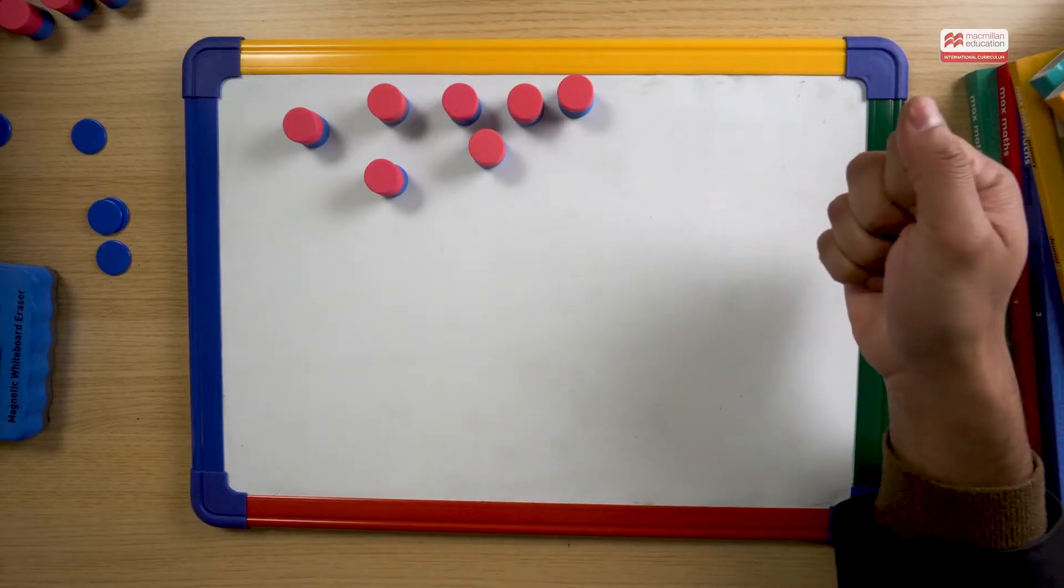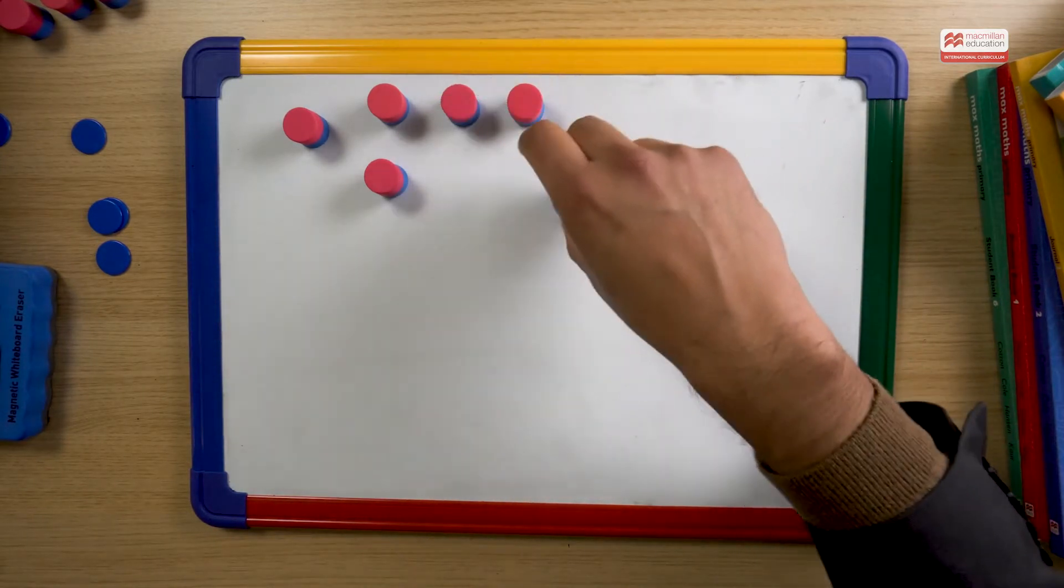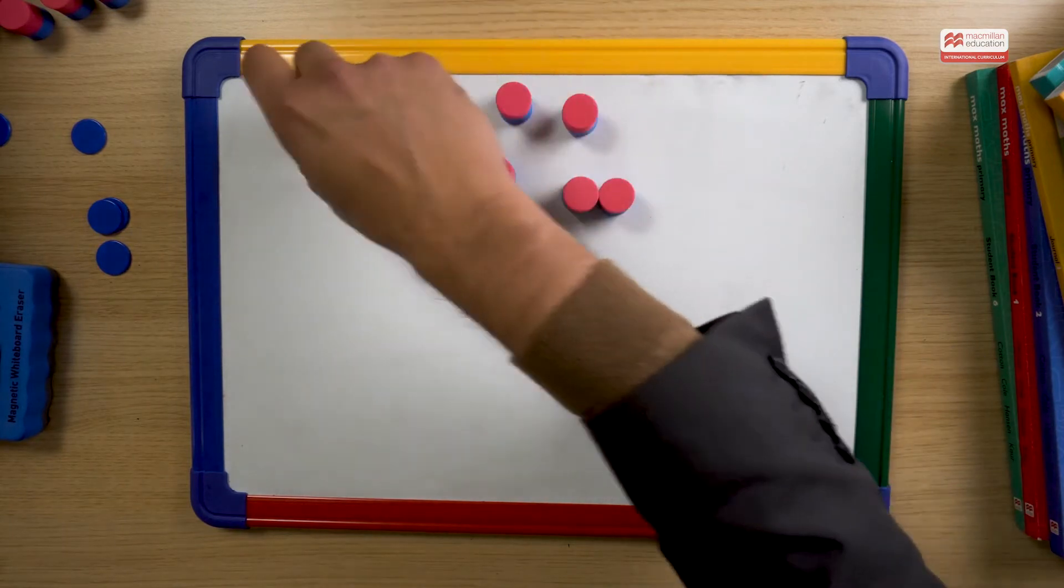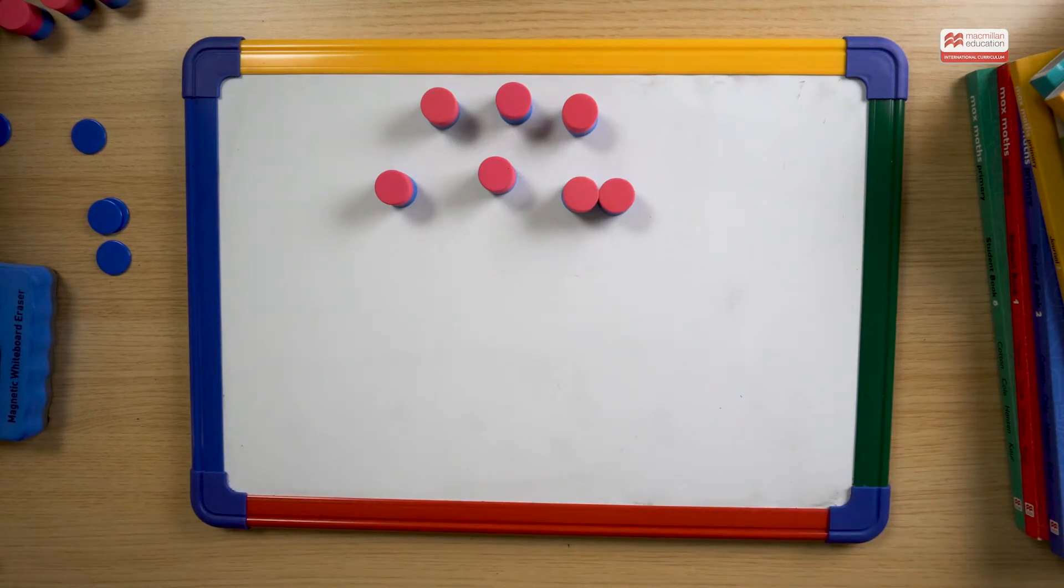So we've looked at factors and now we're going to look at another type of number and the factors of that type of number. We have a few counters here in front of us. One, two, three, four, five, six, seven. Seven counters. I might ask my class, can you make different rectangles like we did with 12 counters? With seven counters? How many different rectangles can you make?